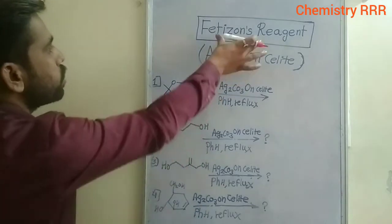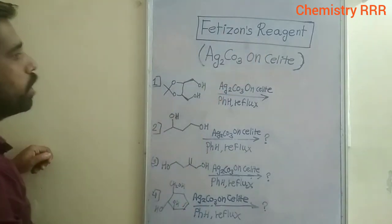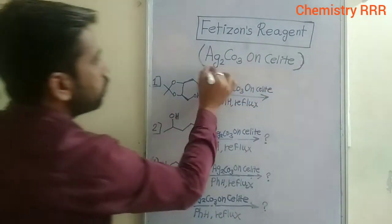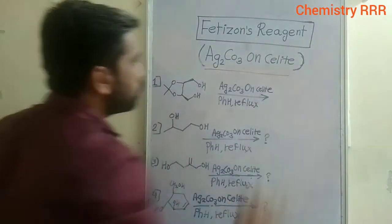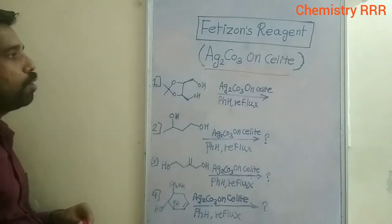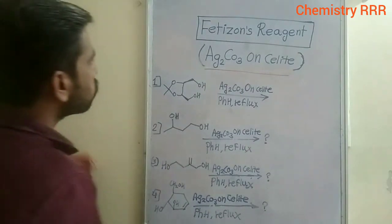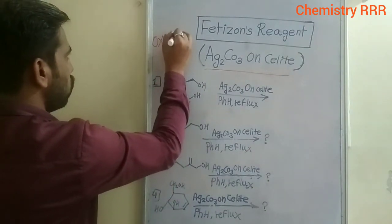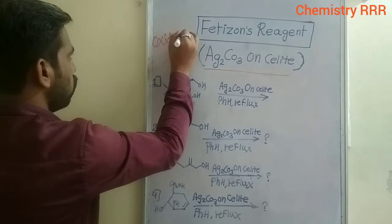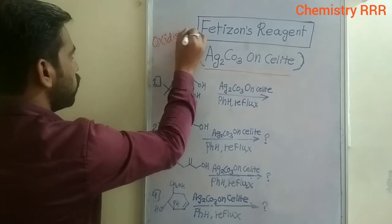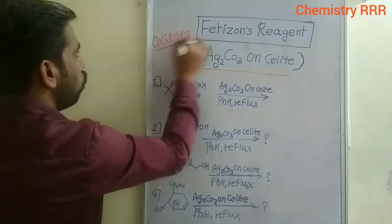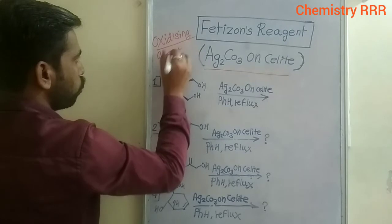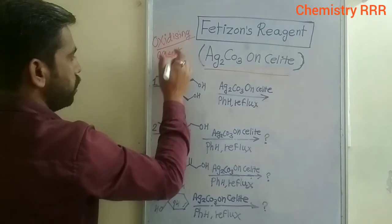Fétizon's reagent is the combination of silver carbonate on Celite. The reagent is silver carbonate on Celite. It is an oxidizing agent and a very important reagent for oxidation.